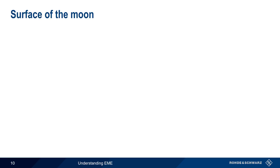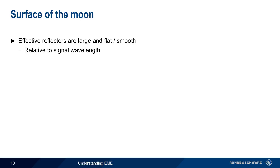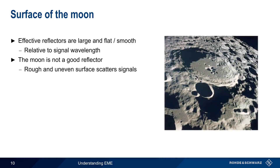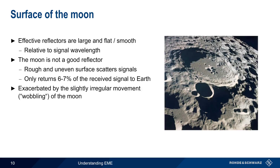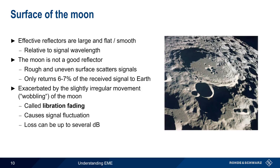The surface of the moon also plays a role in EME communications. An effective radio frequency reflector should be large and flat, or smooth — large here meaning large relative to the wavelength of the signals. Although the moon clearly meets the size requirement, it's not a particularly good reflector due to its rough and uneven surface. The moon's surface scatters rather than reflects most of the signals reaching it, and therefore only about 6-7% of the signal received by the moon is reflected in the direction of the Earth. The situation is made worse by the fact that the moon wobbles slightly, and this loss due to wobbling is called libration fading. Libration fading causes fluctuation in received signal power, with a variation in loss usually up to several dB, and sometimes causes choppiness or fluttering in demodulated EME signals.